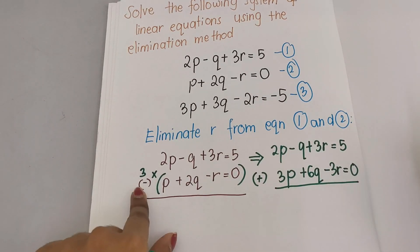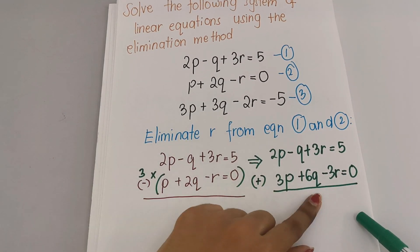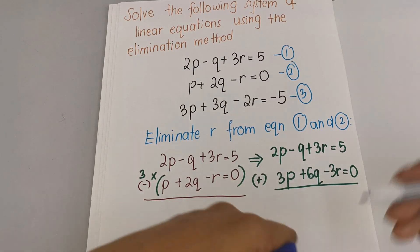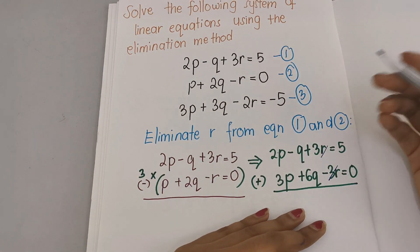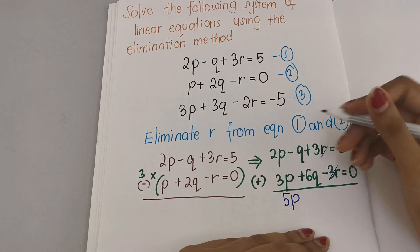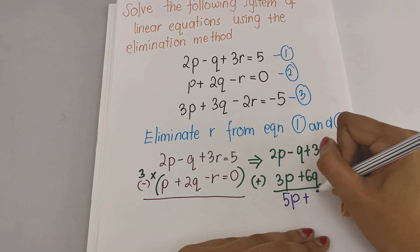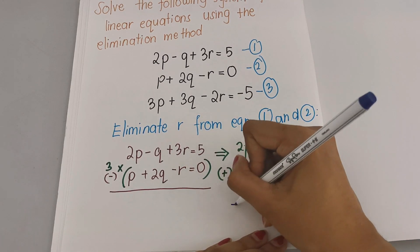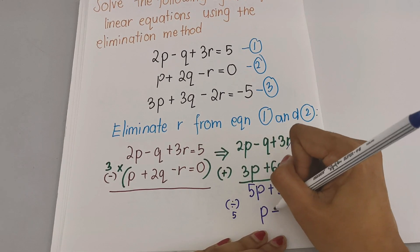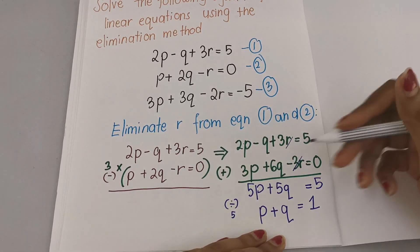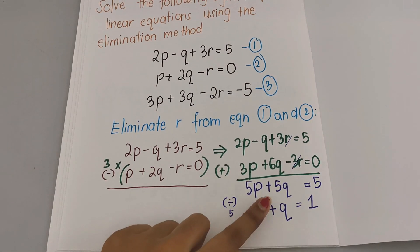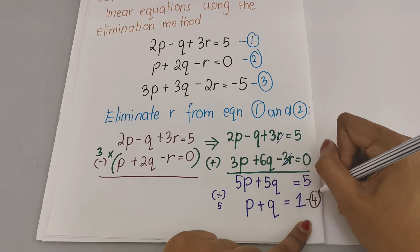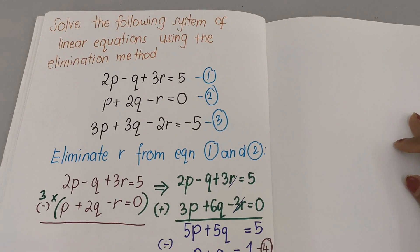So we need to add the equations — check whether to add or subtract so that r cancels. Here the sign means we add: 2p plus 3p is 5p, negative q plus 6q is positive 5q, equals 5 plus 0 which is 5. We can simplify by dividing everything by 5, giving p plus q equals 1. I'll call this equation 4.